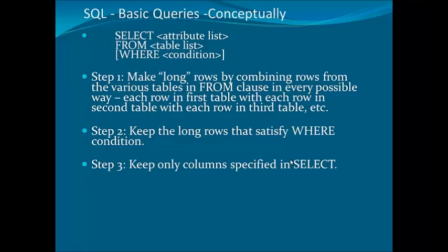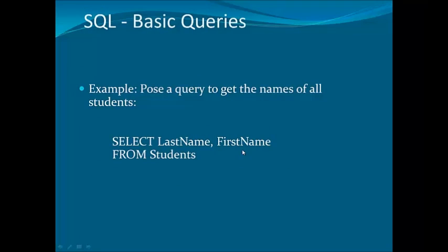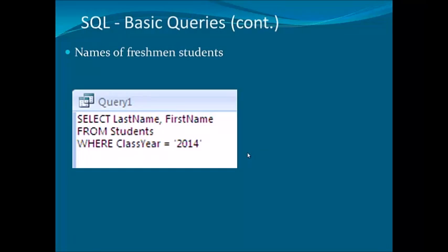Here we have an example. In this example we are selecting two columns from a table named 'students'. The first column name is 'last_name' and the second column name is 'first_name'. We are selecting last_name and first_name from students WHERE class_year = 2014. So here you can see we are putting a filter: the class year should only be 2014, so records for 2015 will not be returned because the statement restricts records to 2014.